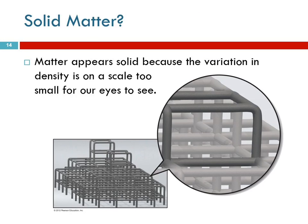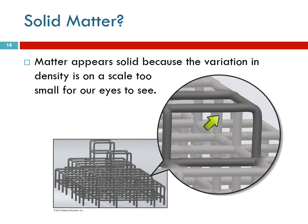So if the atom is mostly empty space, how come matter seems solid? It seems solid because the variation in density is on a scale that's too small for our eyes to see. This is a picture of scaffolding — if you look at it close up, you can see the metal bars, but most of this structure is empty space. But when you back up and look at it from a distance, it looks solid because the variations are too small to detect. That's what's going on with seemingly solid matter — the variations between the dense nucleus and the almost empty outer part of the atom are so small that we can't detect them.